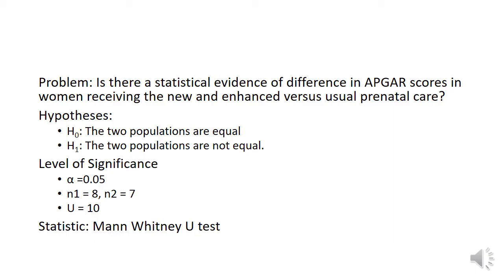For the level of significance, we are going to test this at alpha equals 0.05. We have N1 equals 8 and N2 equals 7. For our tabular value of U, we have 10. For the statistic, we will be using the Mann-Whitney U-Test.